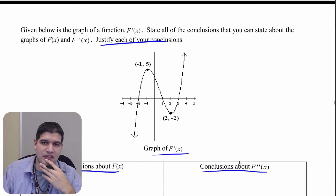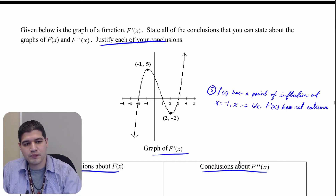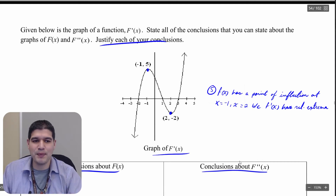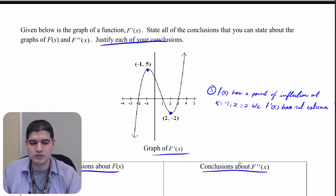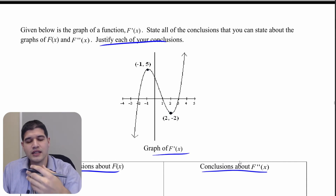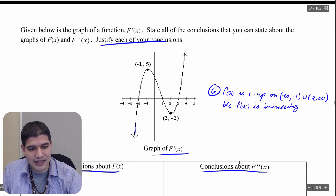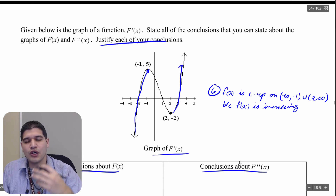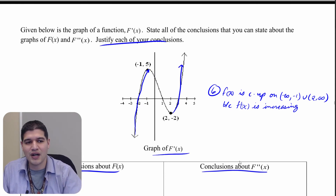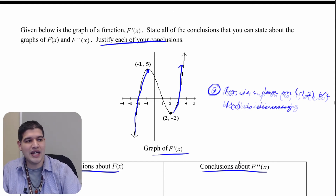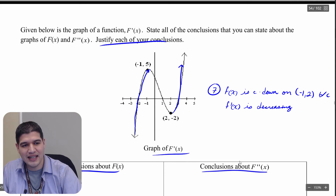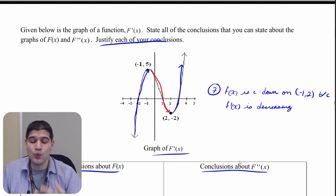Something a bit harder to see: where f prime has a maximum at x equals negative 1 or a minimum at x equals positive 2, those are actually going to be points of inflection for f. Where f prime is increasing — between negative infinity and negative 1, and 2 to infinity — f is going to be concave up. Between negative 1 and positive 2, since f prime is decreasing, f is concave down.